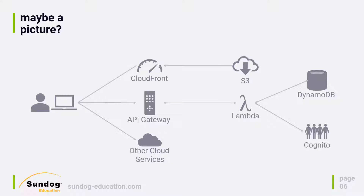For example, if you need to retrieve some data to display on your website, you might issue a JavaScript request through the API gateway to Lambda, which then translates that to a call to DynamoDB — a NoSQL database solution for storing information like chat messages. It might also communicate with the AWS Cognito service, which manages user login information, allowing users to sign up for accounts and authenticate securely. You can even talk to other cloud services beyond AWS, like Disqus commenting or Facebook comments, or incorporate analytics. The sky's the limit.